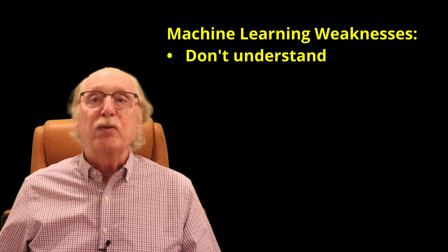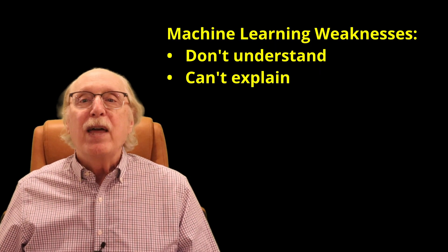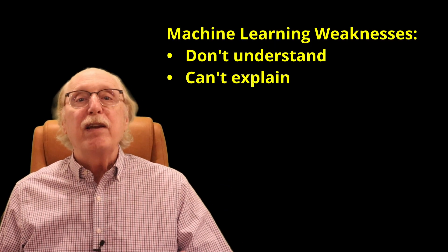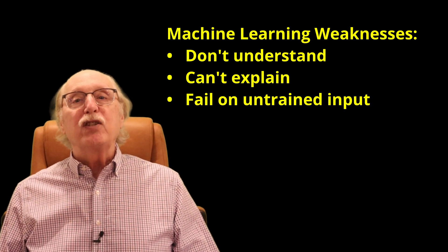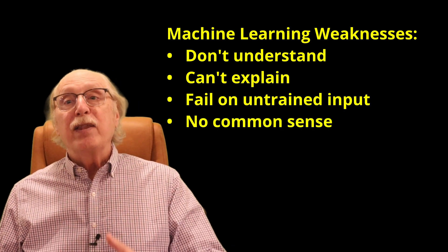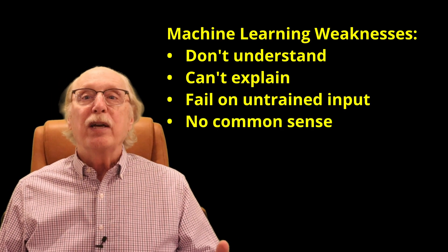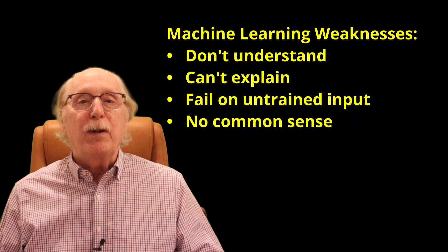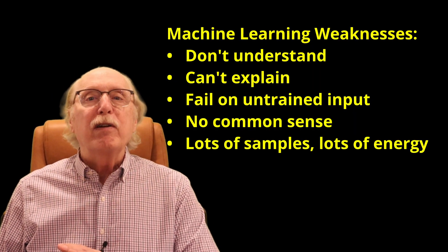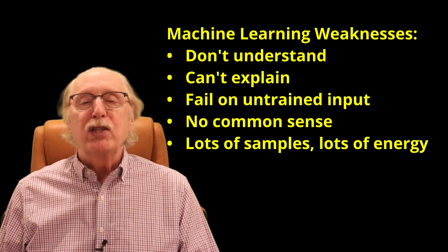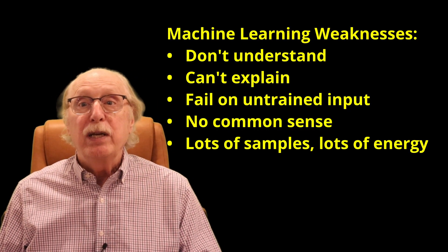Machine learning systems don't understand what they're doing. They can't explain their reasoning, they fail when presented with data outside their training distribution, and they lack the abstraction and common sense that come naturally to people. They don't learn efficiently, requiring far more examples than any child would, and they don't learn continuously.